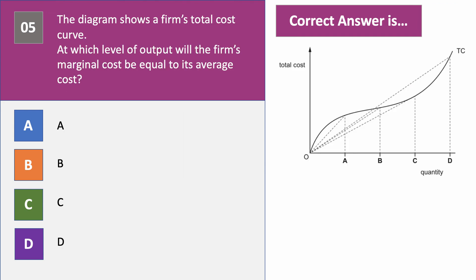One more question — a slightly trickier one, a real test for you. The diagram shows a firm's total cost curve. At which level of output will the firm's marginal cost be equal to its average cost? This will take you a few moments — have a go at question five. It looks like a complex diagram with lots of gradients and curves moving around.